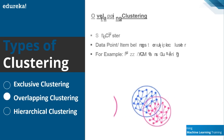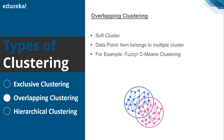Next comes overlapping clustering, which is a soft clustering in which data points or items can belong to multiple clusters. An example of such clustering is fuzzy C-Means clustering. In the diagram, some of the blue data points are overlapping with the pink data points. That is what happens in C-Means or fuzzy clustering — that's what overlapping clustering is.